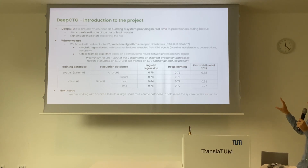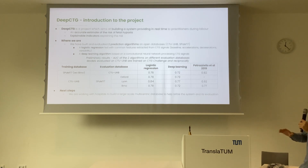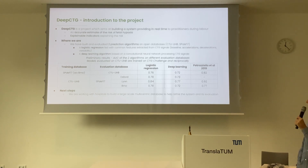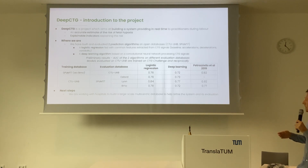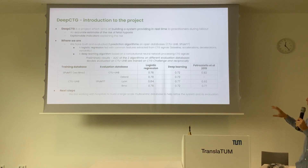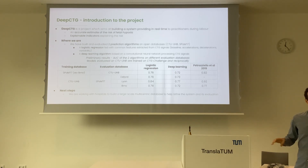The two prediction algorithms we built are the following. We started with a relatively simple model: a logistic regression fed with features extracted from the CTG signals, based on guidelines around baseline, accelerations, decelerations, and fetal heart rate variability. The second algorithm is a deep learning algorithm where the CTG signals are processed with convolutional layers. The table summarizes the preliminary results applying those two models on our two databases, evaluating all algorithms through the area under the curve.